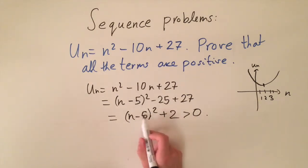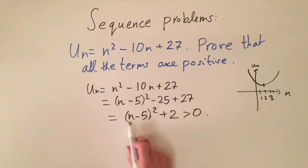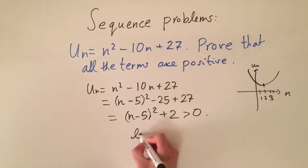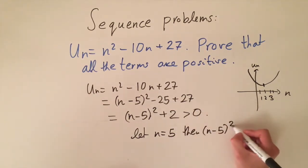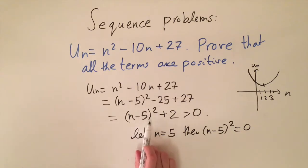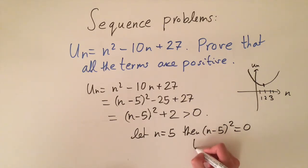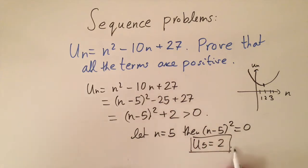For the bonus question of finding the smallest term: since (n - 5)² is always non-negative, the smallest it can be is zero. Setting n = 5 makes (n - 5)² = 0, which minimizes the function. That leaves just the 2, so u(5) = 2, which is the minimum term in the sequence. We've proven the sequence has only positive terms and found that the smallest is 2.